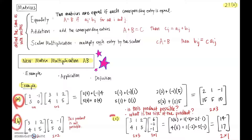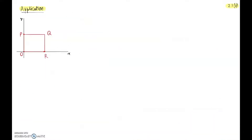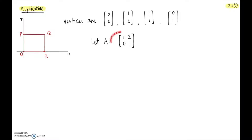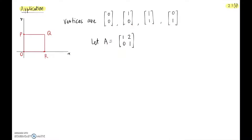Now that we've seen three examples, let's talk about an application. We're in R² with x and y axes, and we have a square with four vertices at (0,0), (1,0), (1,1), and (0,1). We also have a matrix A. The question is: is it possible to multiply this matrix by each of these vectors? And if so, what happens to these points? We can think of this matrix as a sort of transformation — moving these points.